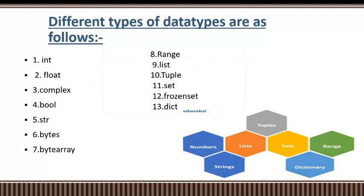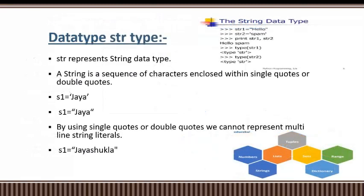I've mentioned some data types point-by-point so you can grasp them easily. The types are: int, float, complex, boolean, string, byte, byte array, range, list, tuple, set, frozen set, and dictionary. All of these data types will be discussed in upcoming videos. But today we are going to understand the slicing operation for strings in Python, which is why I've chosen the topic of string data type.